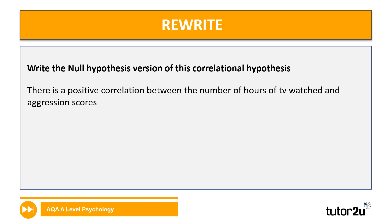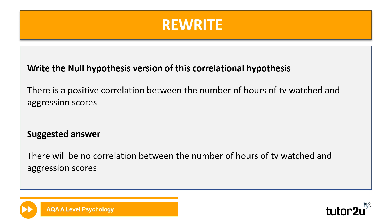The next hypothesis is: 'There is a positive correlation between the number of hours of TV watched and aggression scores.' Pause the video and write a null hypothesis. The answer: 'There will be no correlation between the number of hours of TV watched and aggression scores.' It's worth thinking about what this would look like as non-directional — it would be something like: 'There will be a correlation between number of hours of TV watched and aggression scores.'